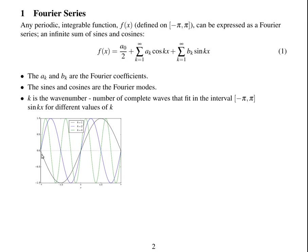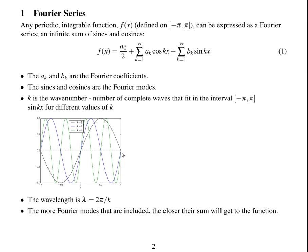The black line shows k equals 1 — exactly one wave fitted into 2 pi. The blue line is k equals 2, so two waves. And the green line is k equals 4. The wavelength is defined as 2 pi divided by the number of waves in that interval, so it's 2 pi over k.